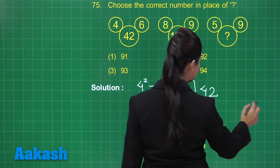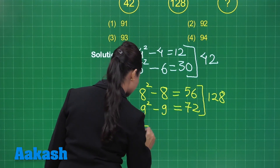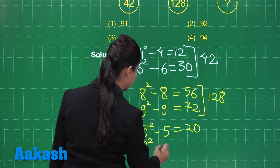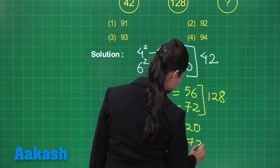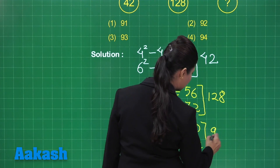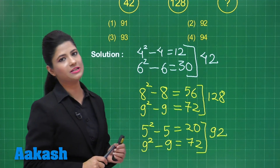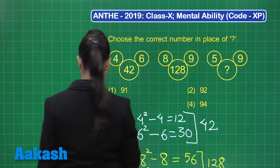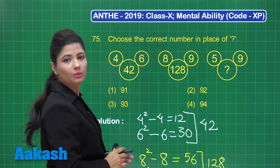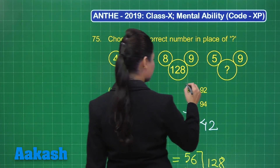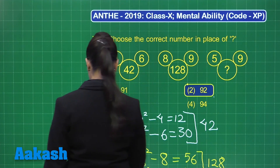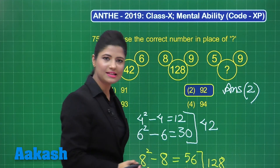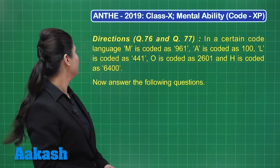Applying the pattern to the third arrangement: 5 squared minus 5 gives 20. Then 9 squared minus 9 gives 72. Taking the sum of 20 and 72, we obtain 92. So the number in place of the question mark is 92. Out of the options provided, 92 is option number 2. Mark your answer as option 2.